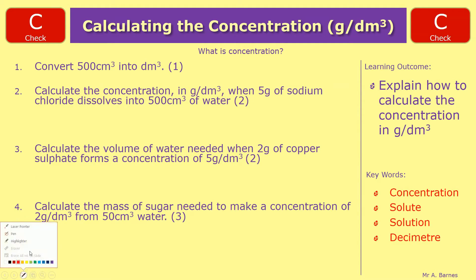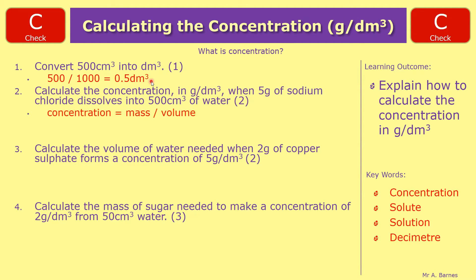Question 1: convert 500 centimetres cubed into decimetres cubed. Divide by 1,000 to give 0.5 decimetres cubed — always put it into a calculator just to be safe. Question 2: calculate the concentration when 5 grams of sodium chloride dissolves in 500 centimetres cubed of water. The equation is mass divided by volume; the units confirm this — grams divided by decimetre cubed. Mass is 5 grams; 500 cm³ divided by 1,000 is 0.5 dm³. So 5 divided by 0.5 gives 10 grams per decimetre cubed.